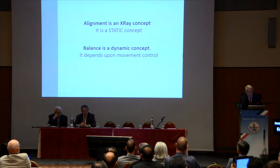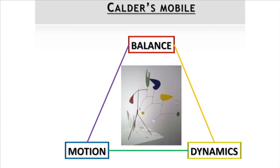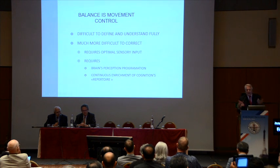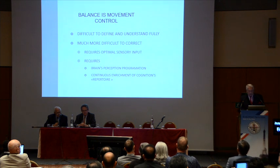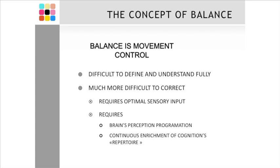Alignment is an X-ray concept. Balance is a dynamic concept. You cannot imagine a Calder mobile — if you weld the different junctions between each piece of the Calder, it will fall. It has to move. So how do you control balance? Balance is a matter of control. It's very difficult to define it fully because it's difficult to understand it. Much more difficult is to correct it. It requires optimal sensory input.